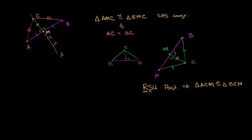If they're congruent, then the corresponding sides are going to be congruent. So that means that AM must be equal to BM, because they're corresponding sides. So this side right over here is going to be congruent to that side. So this really is bisecting AB. This line MC really is on the perpendicular bisector — it really is part of the perpendicular bisector.